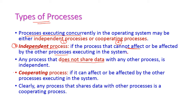That is, it cannot share any data with other processes, so it is called an independent process. The second type is the cooperating process, where one process may be dependent on other processes. It can affect or be affected by other processes executing in the system, and it can share data with other processes.